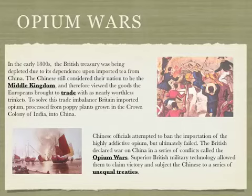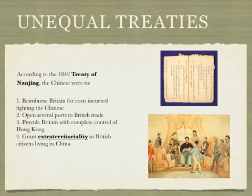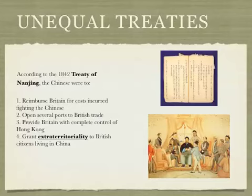The British declared war on China in a series of conflicts called the Opium Wars. Superior British military technology allowed them to claim victory and subject the Chinese to a series of unequal treaties. According to the 1842 Treaty of Nanjing, the Chinese were to: 1) reimburse Britain for costs incurred fighting the war, 2) open several ports to British trade, 3) provide Britain with complete control of Hong Kong, and 4) grant extraterritoriality to British citizens living in China.